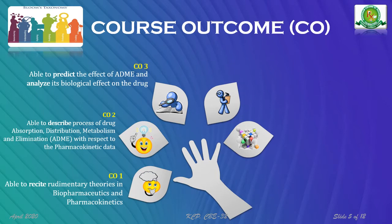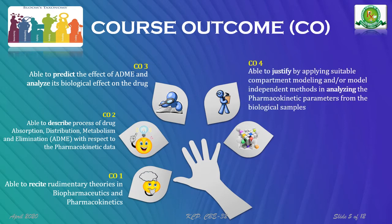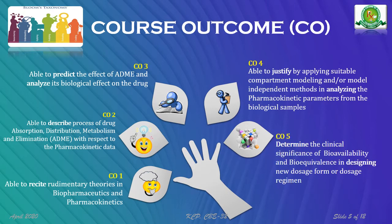CO3: able to predict the effect of ADME and analyze its biological effect on the drug. CO4: able to justify by applying suitable compartment modeling or model-independent methods in analyzing the pharmacokinetic parameters from biological samples. CO5: to determine the clinical significance of bioavailability and bioequivalence in designing new dosage forms or dosage regimens. Let's move on to the next slide.